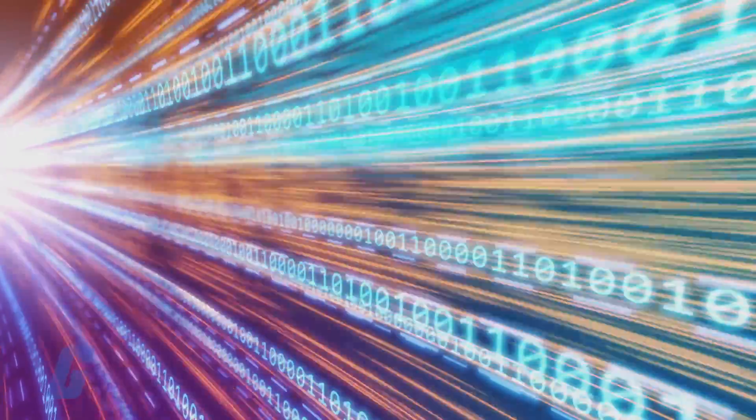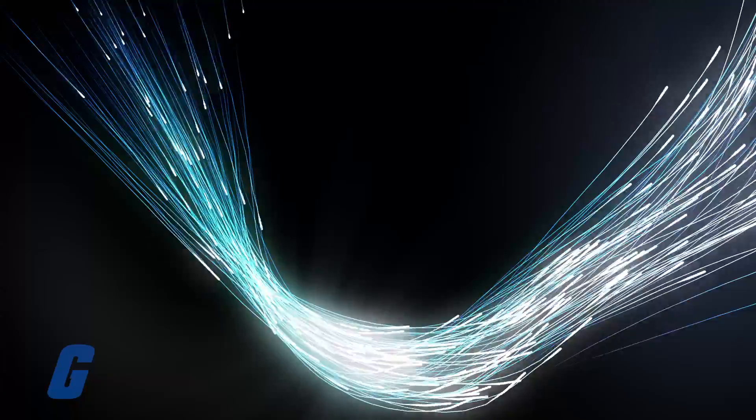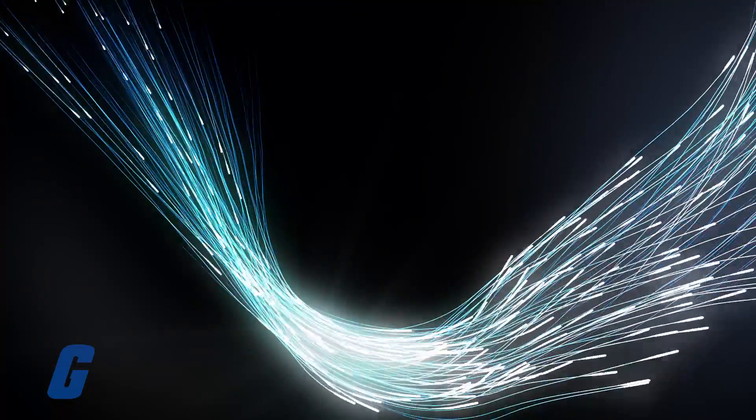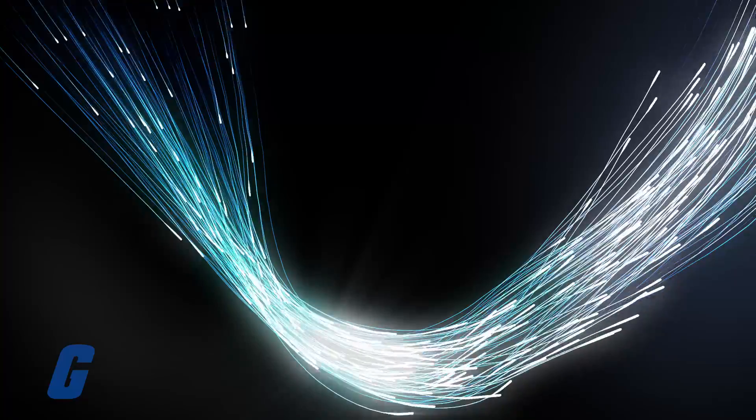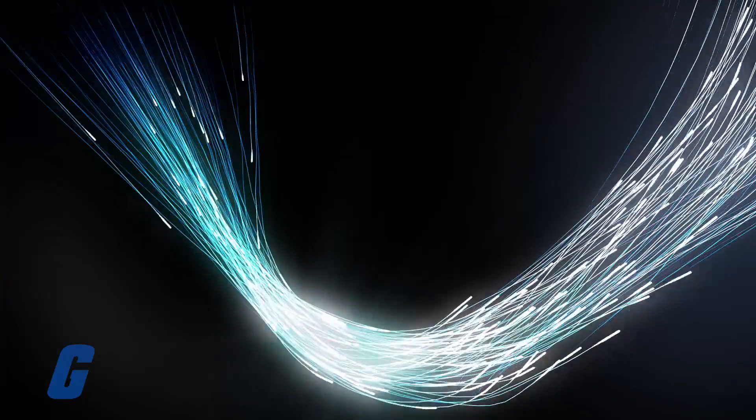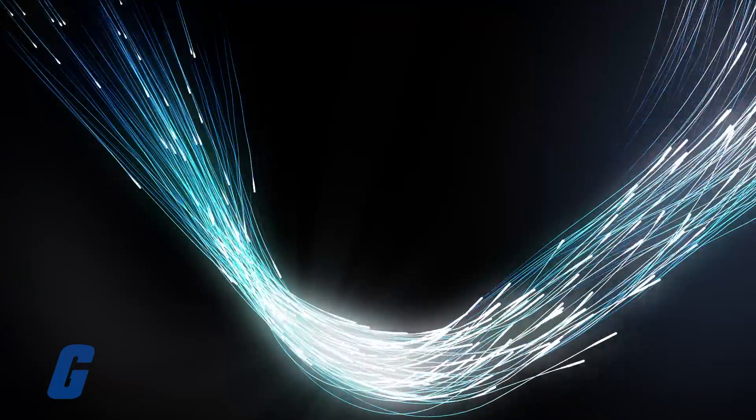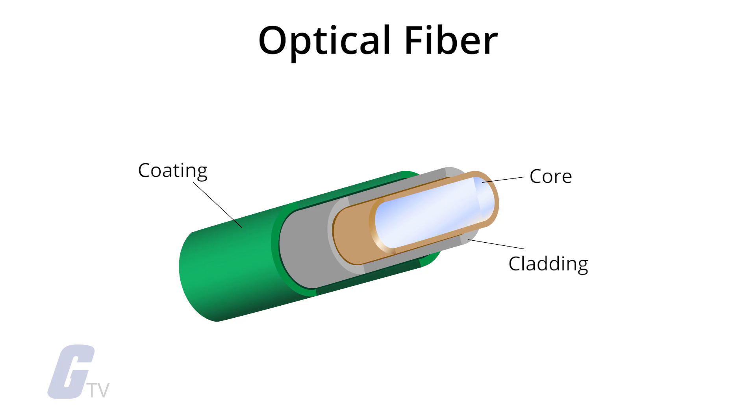Fiber optic cables carry information between two places using entirely optical, light-based technology. Fiber optics transmit data in the form of light particles, or photons, that pulse through a fiber optic cable. The glass fiber core and cladding each have a different refractive index that bends incoming light at a certain angle.